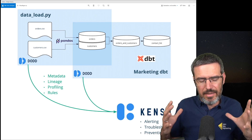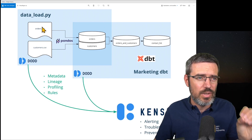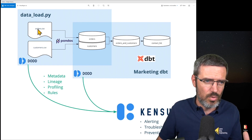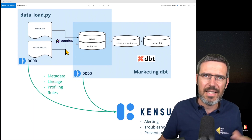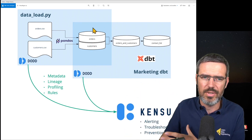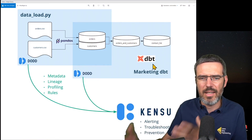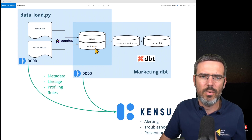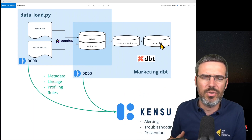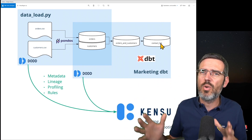Here's a marketing example where monitoring your data and observing what's actually going on is usually very difficult. You have on the left a data load Python script that takes in two CSV files — an orders CSV and a customer CSV — you do some transformation and merging with pandas, and load it into a data store. Then you do transformations with something like dbt on your marketing data, taking orders and customers and transforming them into a combined dataset, and then extract a contacts list from that. Multiple stages of pipelines.